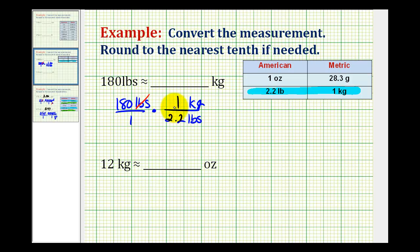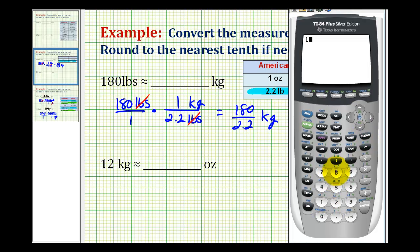Now notice how pounds simplifies out, and we're left with 180 divided by 2.2 kilograms. So this quotient will tell us how many kilograms is in 180 pounds. So we'll have 180 divided by 2.2, and they want us to round to the nearest tenth, so this will be approximately 81.8 kilograms.